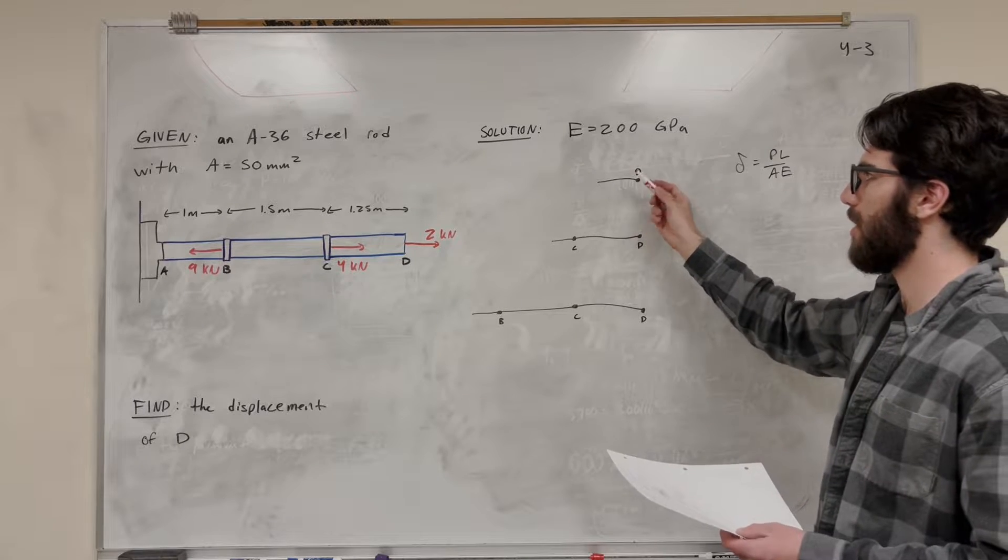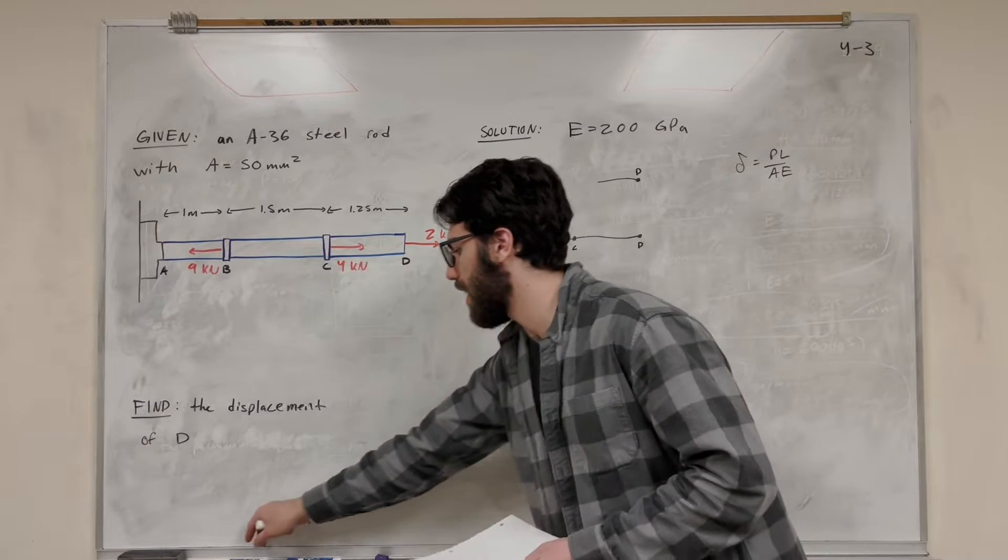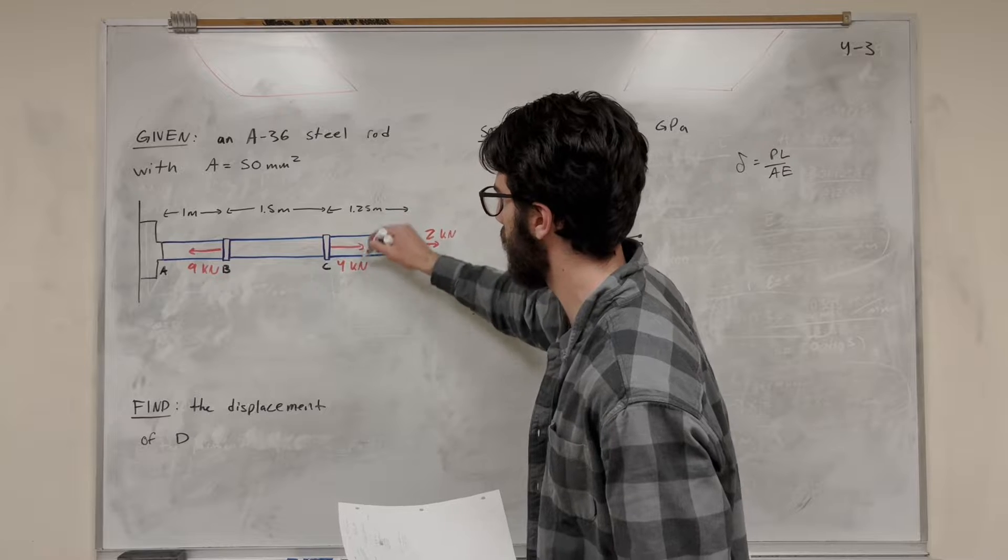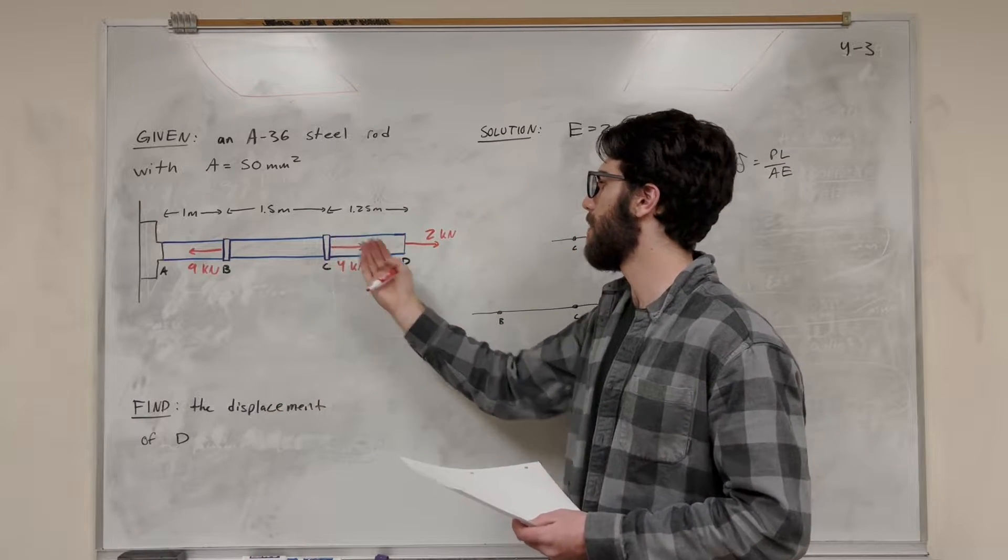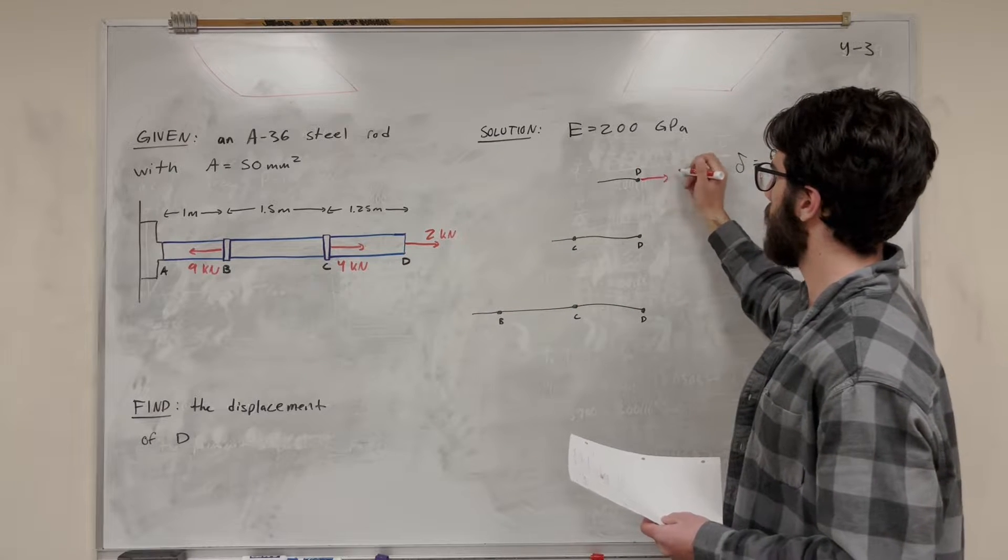So let's start with this point D. So I took a cut, basically. If you're looking at the graph, I basically took a cut right along here, point CD. So we're looking at here, and we're looking at just the right side of it. So we know that we have this 2 kilonewton force here.